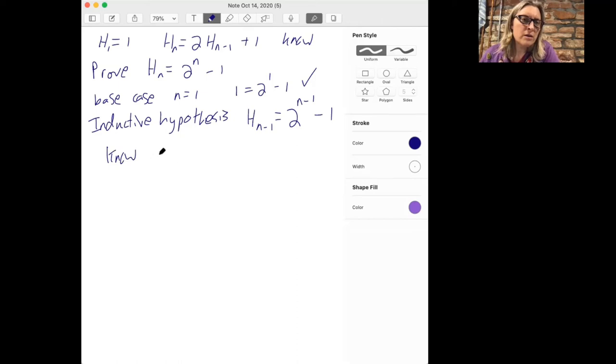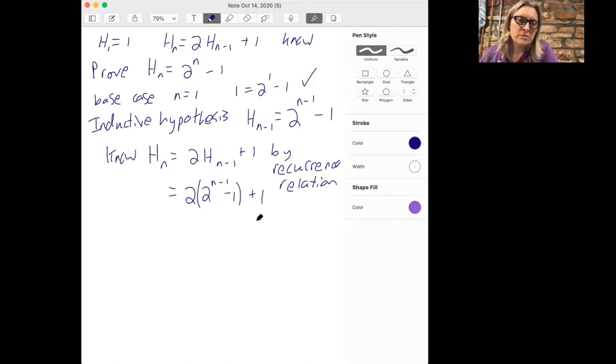And so now we're going to prove a formula for h_n. So we know that h_n is 2h_(n-1) plus 1 by the recurrence relation. Then we can write this as 2 times 2 to the n minus 1 minus 1 plus 1. What we did is we just substitute for h_(n-1) by the inductive hypothesis. And now we simplify that. Here we have 2 raised to the power n minus 1 plus 1. So that's 2 to the n. I'm going to distribute to get minus 2 plus 1. And that simplifies as 2 to the n minus 1. All right. And so we just proved this by induction.